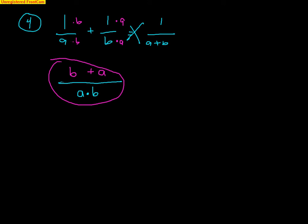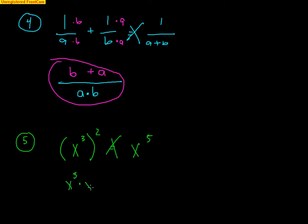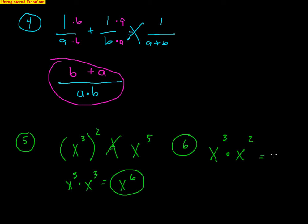Next up are very common exponent rules kids mess up. For example, X to the third, squared — this is where you multiply the exponents, not add. Some kids think this means X to the fifth, but that's wrong. This is X cubed taken twice, so it means X to the sixth — three times two. Similarly, X to the third times X to the second: here you're supposed to add the exponents because it's not a power to a power. This is three X's and two more X's, giving X to the fifth.